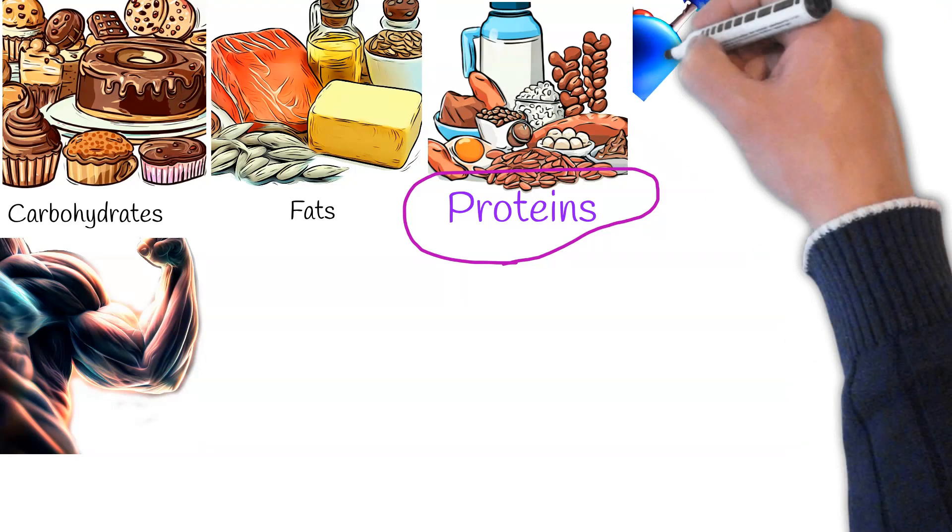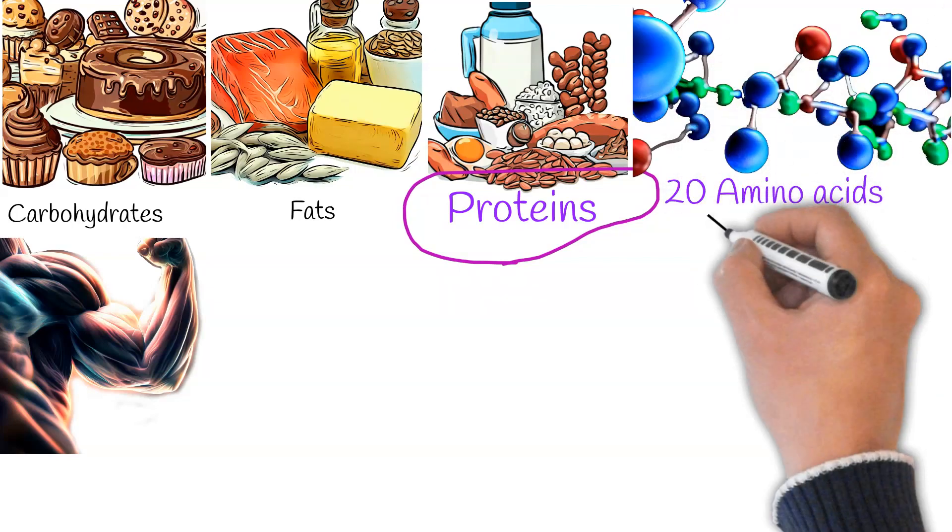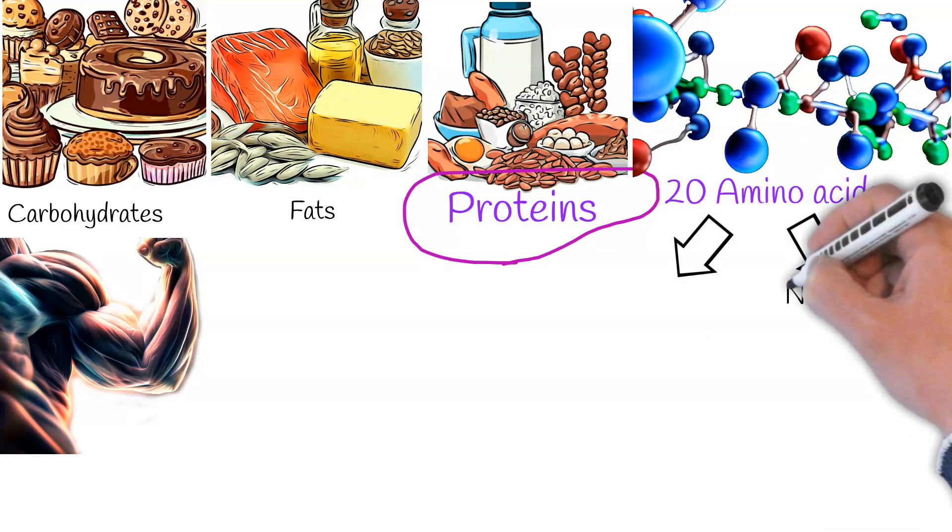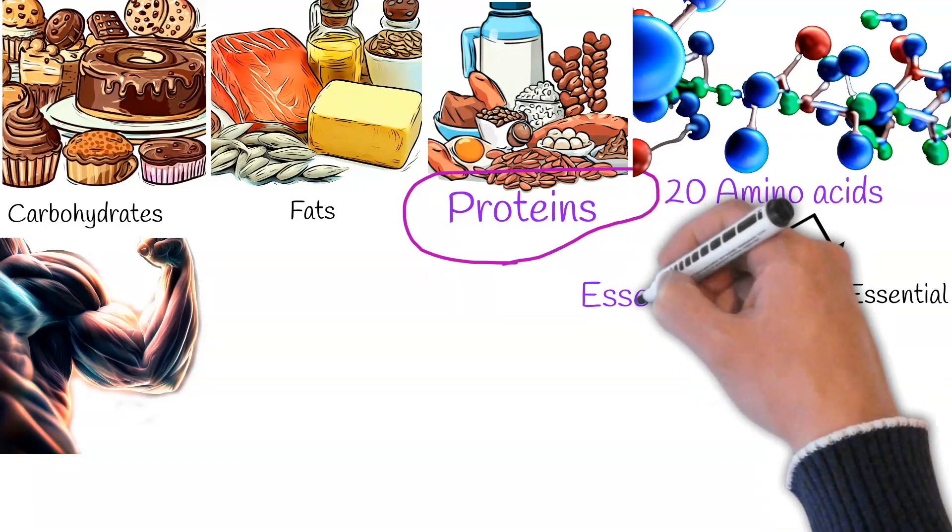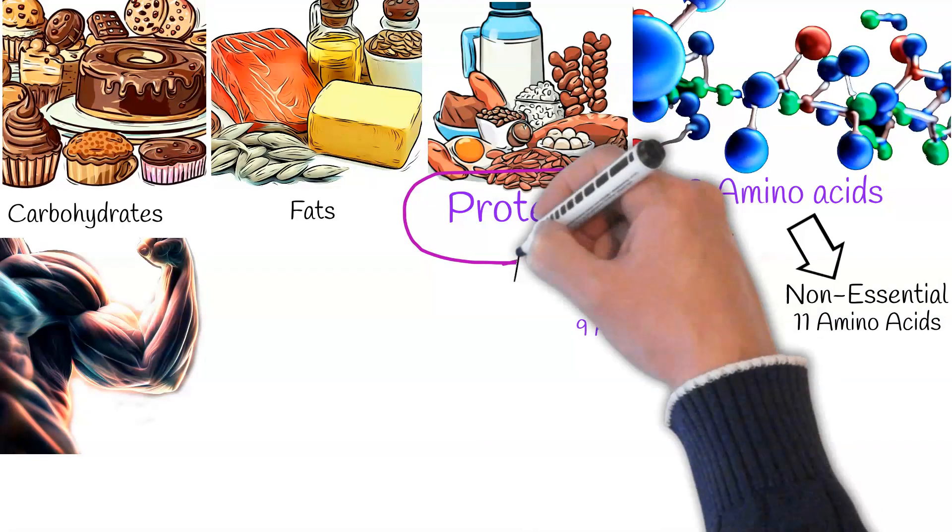Proteins are large molecules made up of 20 distinct amino acids. Of these 20, 9 are deemed essential. This means our bodies cannot synthesize them on their own, making it imperative for us to source them from our diets.